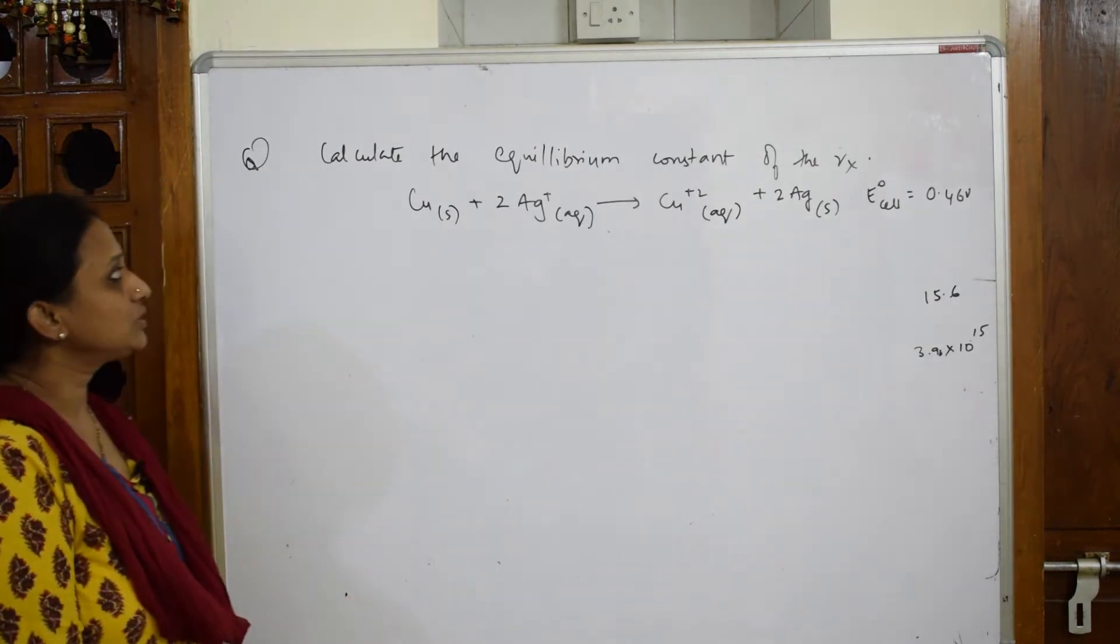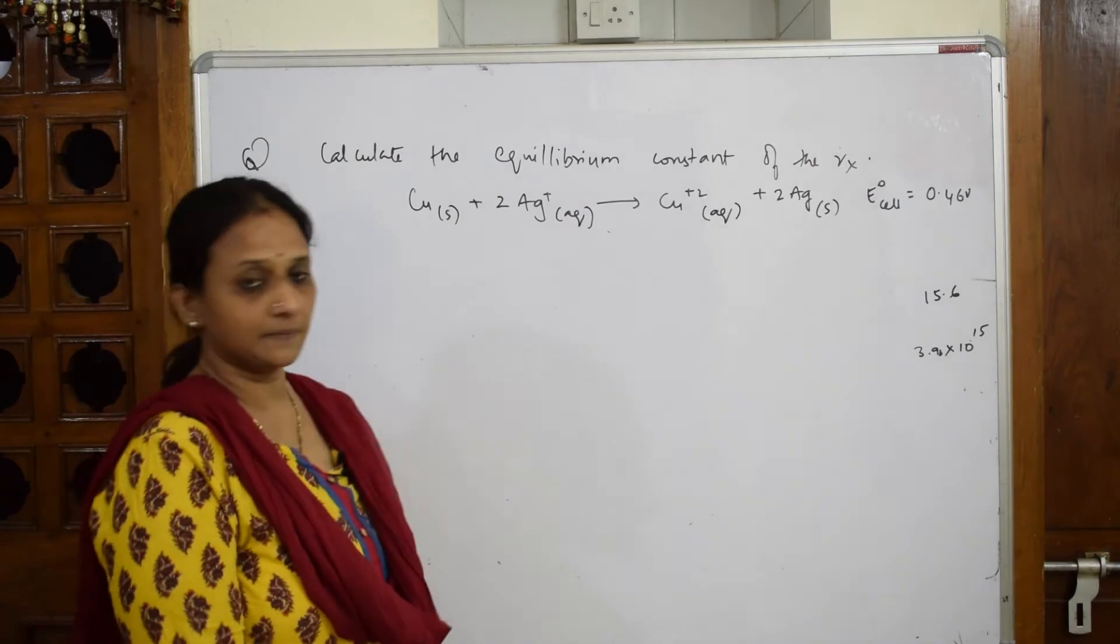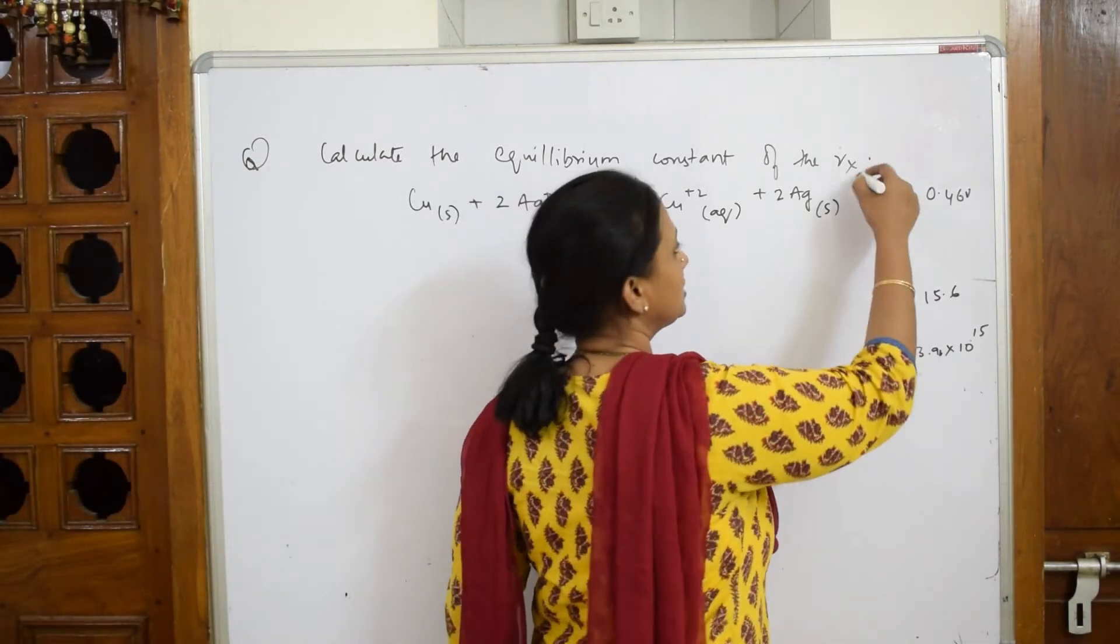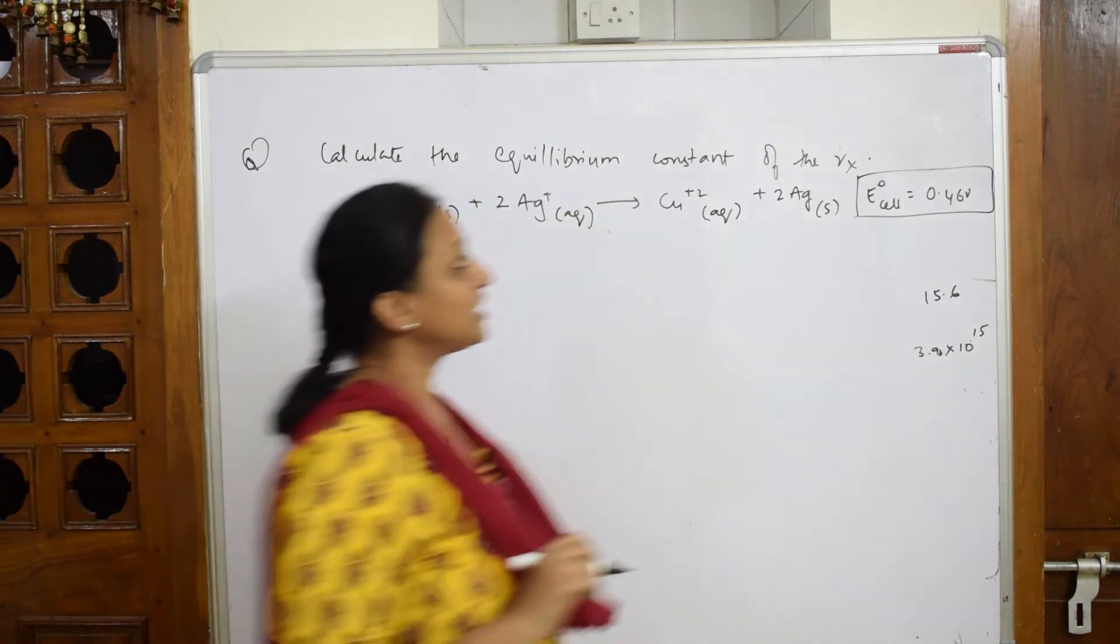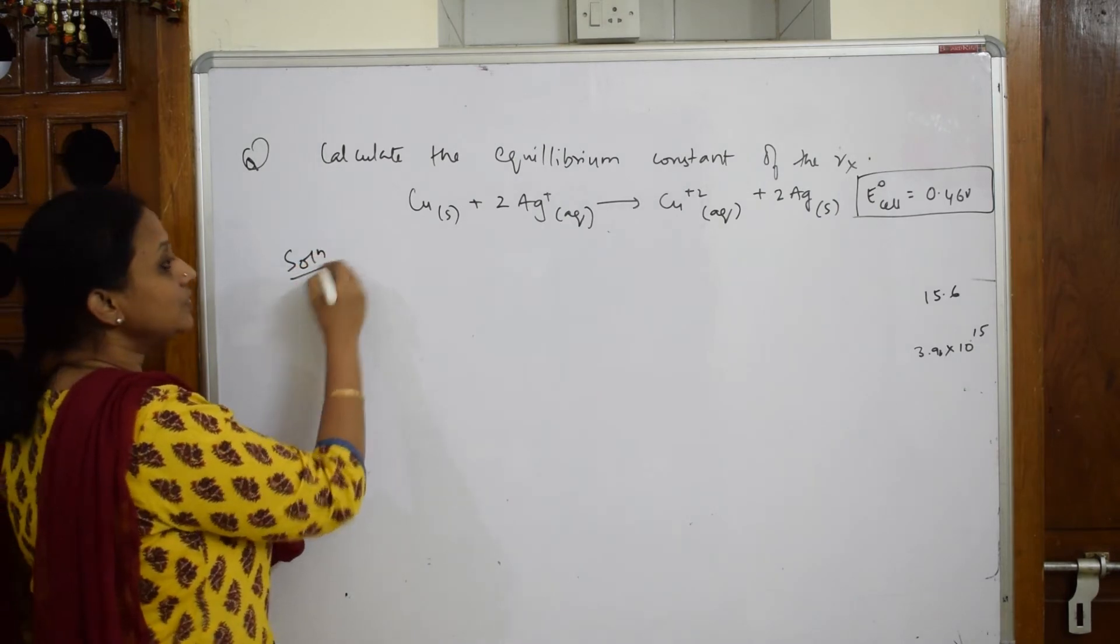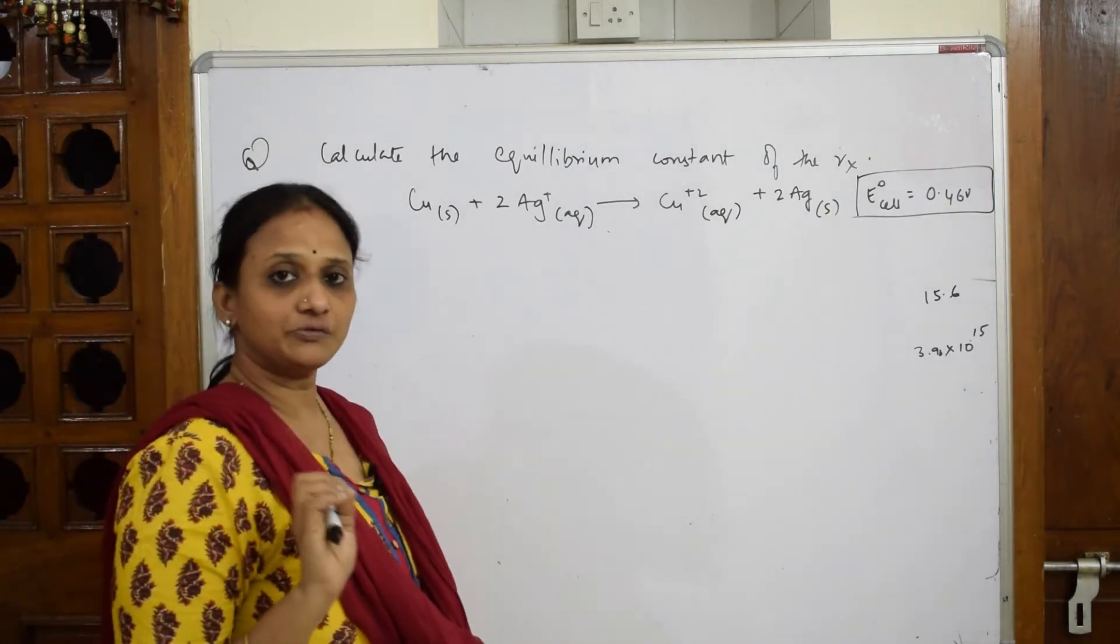Let's come back to this. What should I do here? I have to calculate the equilibrium constant of the reaction. There's one reaction given to us - half cell reactions that together make the overall reaction - and I have to calculate the equilibrium constant. What is the formula I have to apply? Always try to write the formula, as you have marks for the formula in the exam.